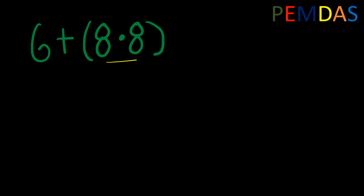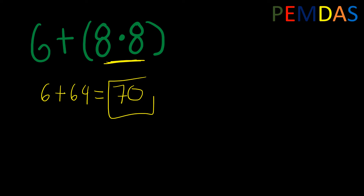The first thing we do is work within the parentheses, so we compute 8 times 8. So it would be 6 plus 64. We don't have any exponents, there is no multiplication, there is no division. There is addition, so 6 plus 64 gives us 70, and that would be the answer.